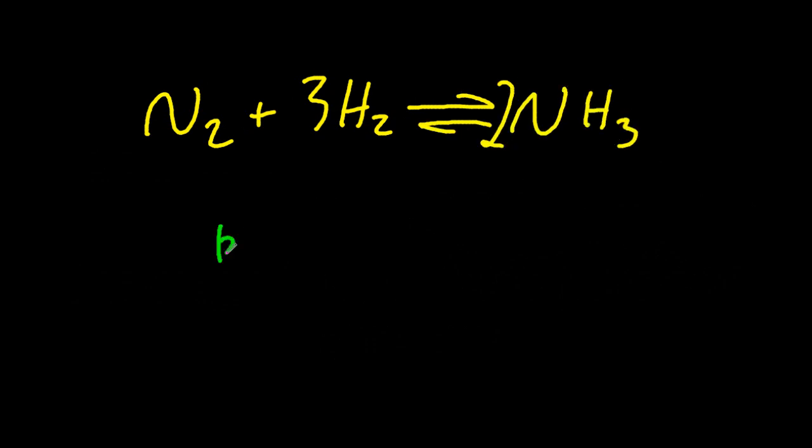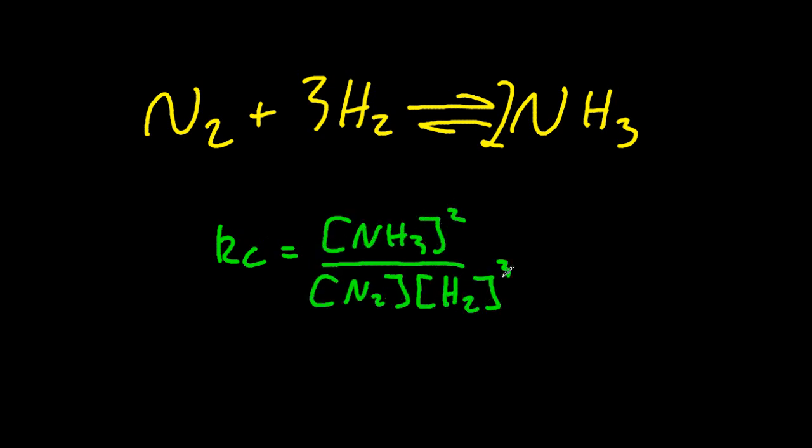And Kc is the products raised to the power of the coefficient divided by the reactants raised to the power of their coefficients. And let's say Kc in this case is, I don't know, a thousand.